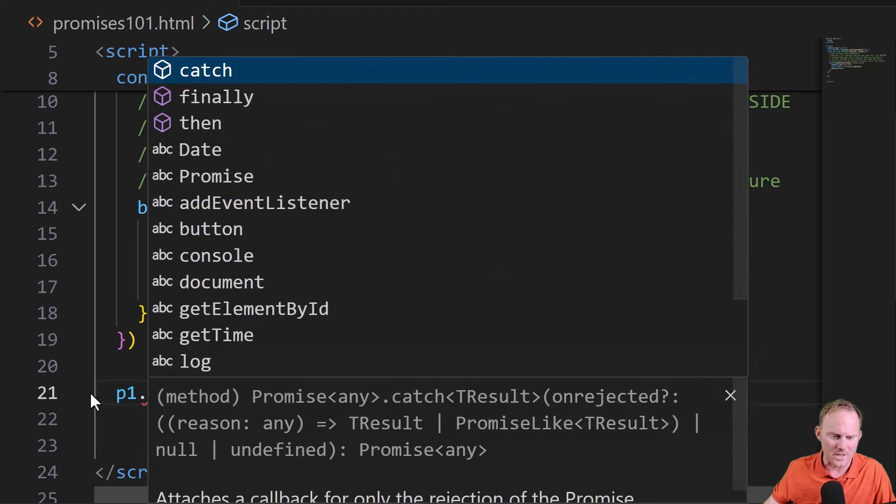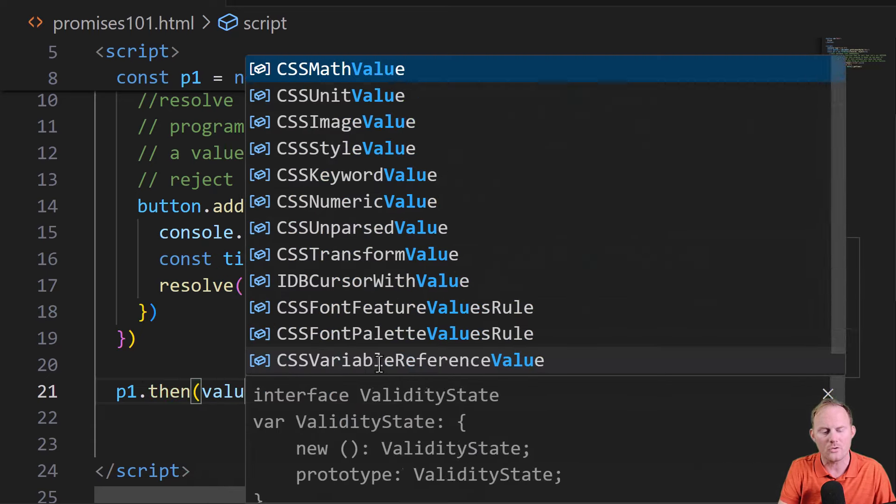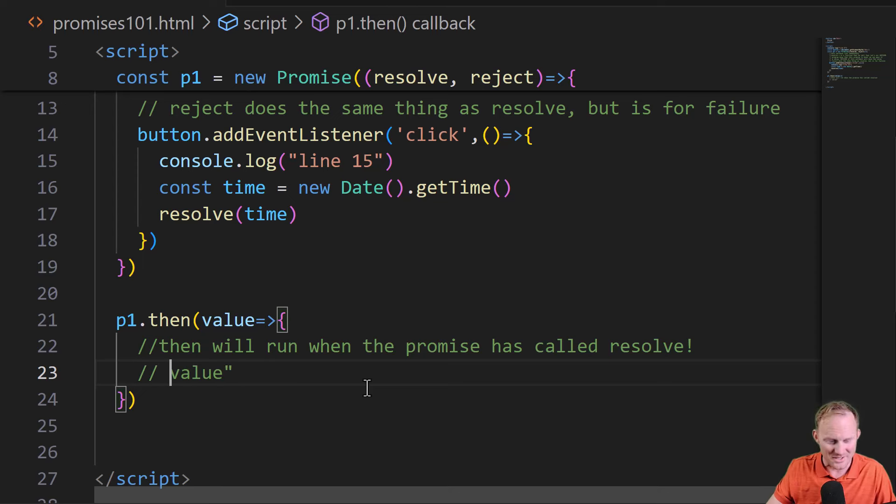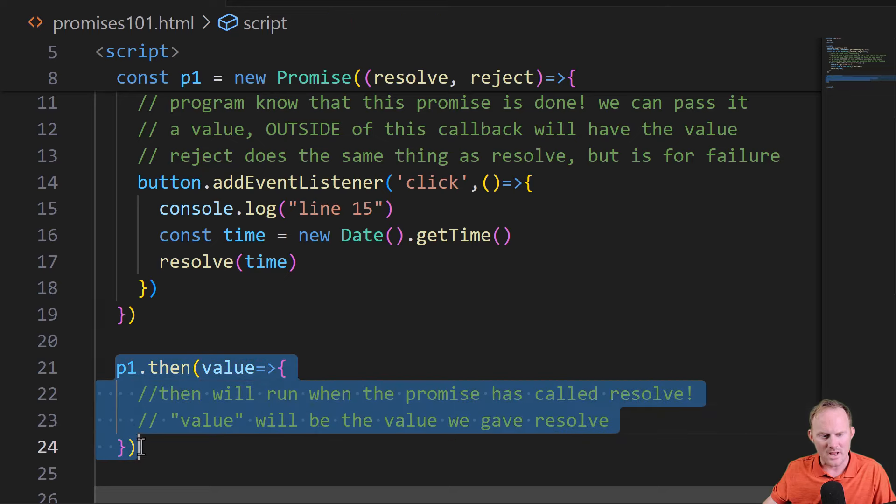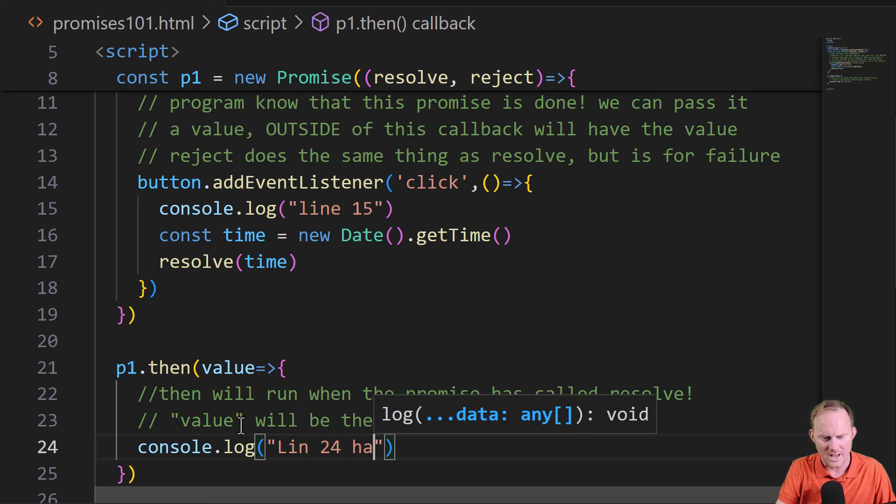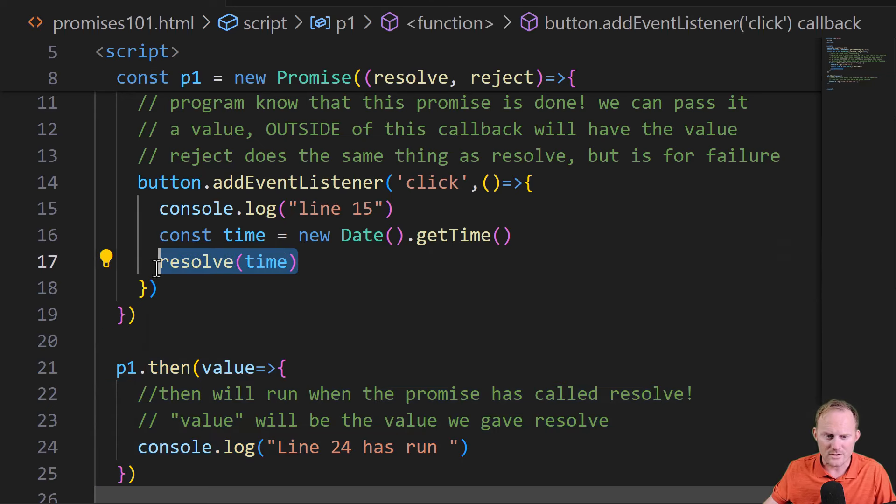How do we find out out here? Well, we grab our promise. So P1, that's the variable that we put our promise in. P1.then open close. And this takes a callback as its parameter as well. So then we'll run when the promise has called resolve. Value, literally value, will be the value we gave resolve. So walking through it one more time. P1.then, and I'll go ahead and put a log in here. Console.log, line 24 has run. This then will not run until resolve is called.